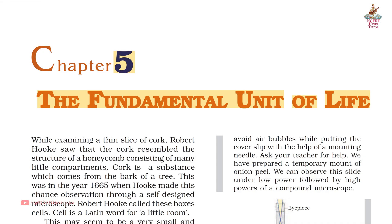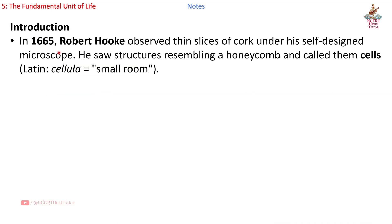Introduction: In 1665, Robert Hooke observed thin slices of cork under his self-designed microscope. He saw structures resembling a honeycomb and called them cells — from Latin 'cellula', meaning small room.